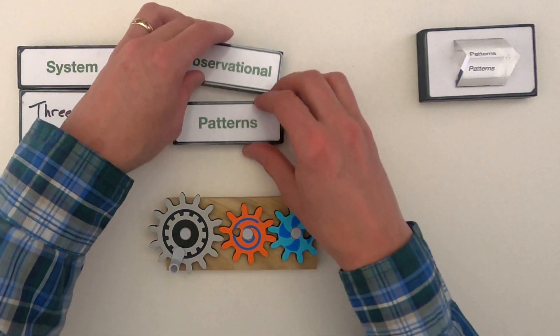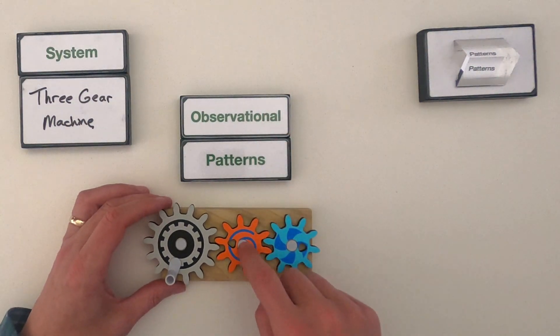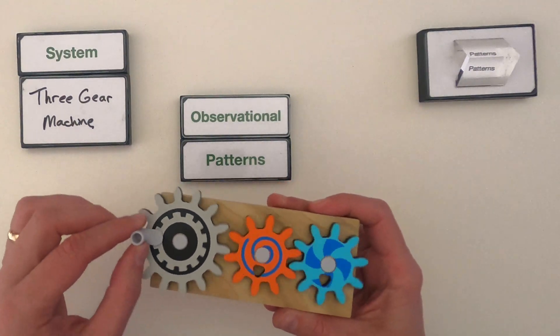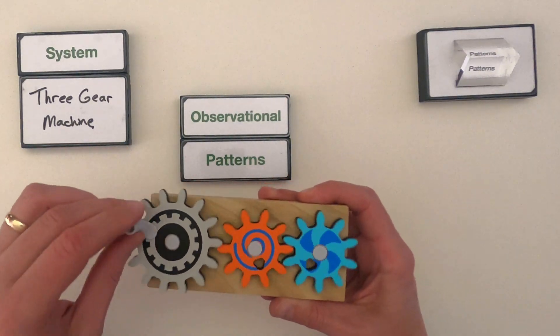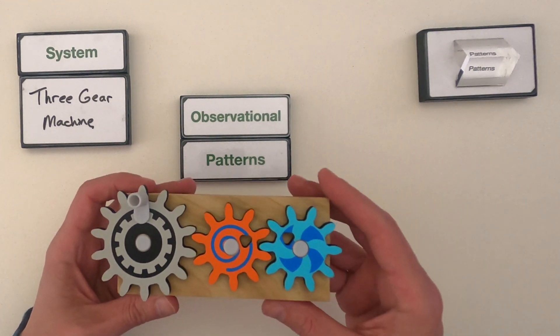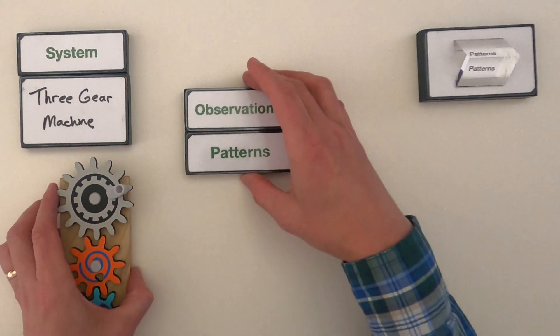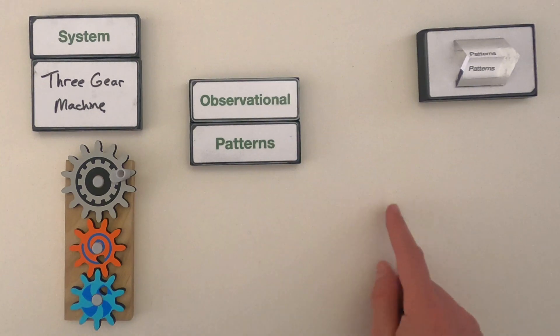All we're going to do when it comes to patterns is we're going to look for observational patterns within the system. You should play around with a system or observe it carefully before you'll start to see any patterns. What I always start with is vision. What can I see and what patterns can I observe just using vision? I'm going to write some of the things down below.